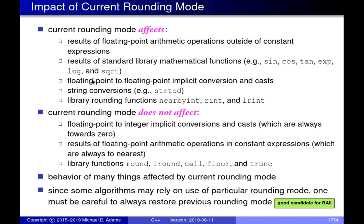Converting between different floating-point types — like float to double, or long double to float — also respects the rounding mode. Converting from a string to a floating-point type, such as strtod, also takes the rounding mode into effect, as do some rounding functions in the standard library like nearby_int, rint, and lrint.